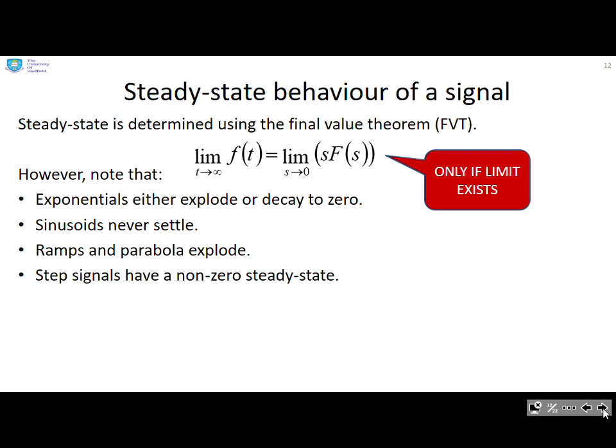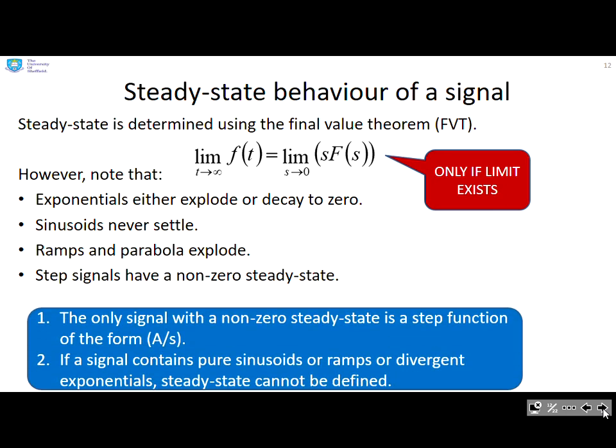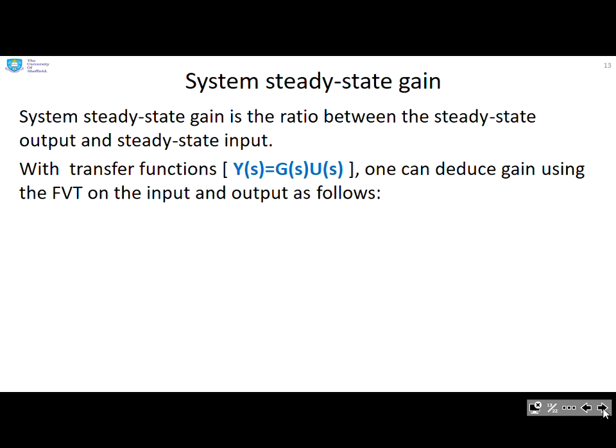Let's look at how we might assess these. A key characteristic is the steady state behavior of a signal. Within inverse Laplace, we showed that you could get these values using the final value theorem, but obviously only if the limit exists. Some of the warnings we gave you is the only signal with a non-zero steady state is a step function of the form a over s. And if a signal contains pure sinusoids or ramps or divergent exponentials, the steady state cannot be defined. We emphasize here, this slide is talking about signals.